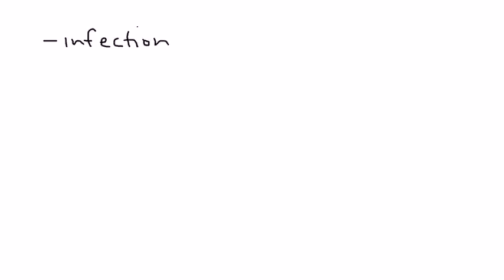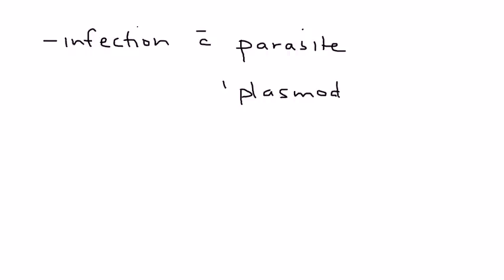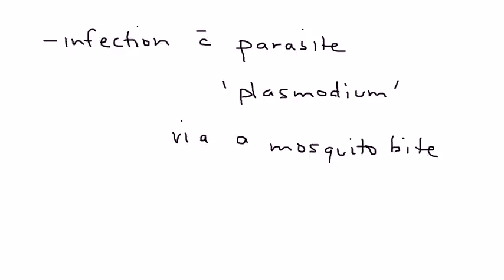Malaria is a very famous and common infection with a parasite known as plasmodium. It is transmitted via a mosquito bite and is endemic around the world, particularly in places like Africa and Asia. Malaria cases happen pretty much anywhere in the world, but certain areas are more endemic than others, and there are different types of plasmodium.